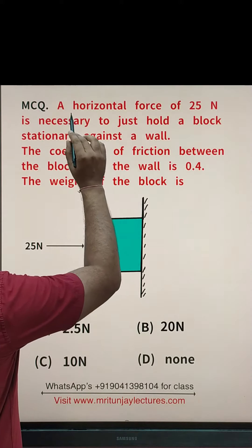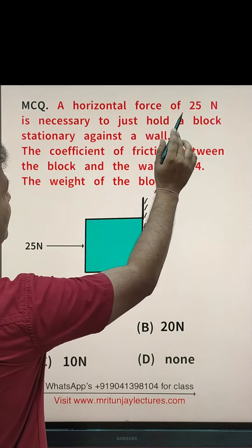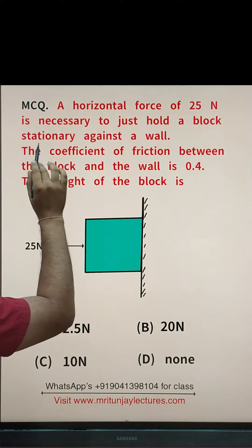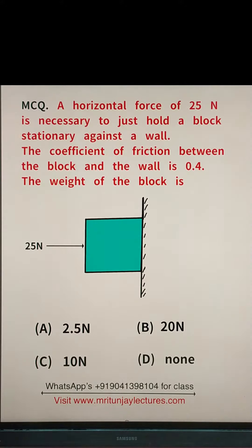Now, question of the day. A horizontal force of 25 N is necessary to just hold a block stationary against a wall. Here, 25 N act in this direction.